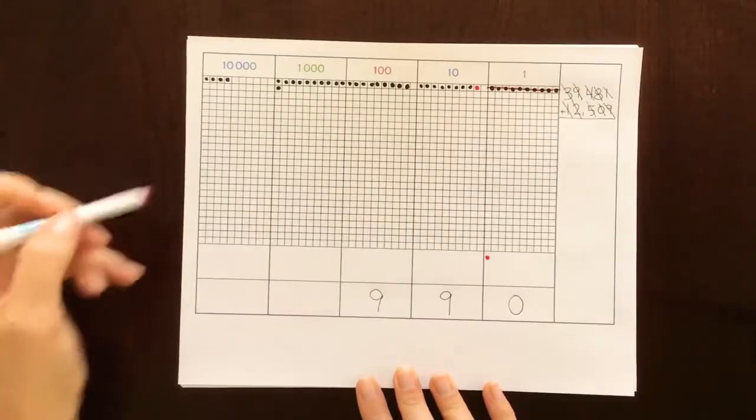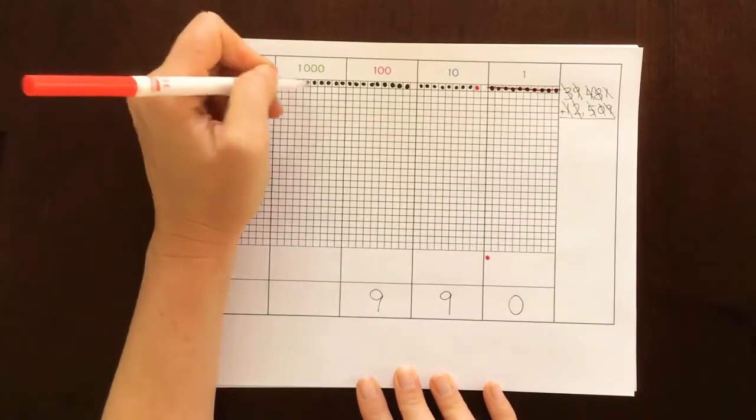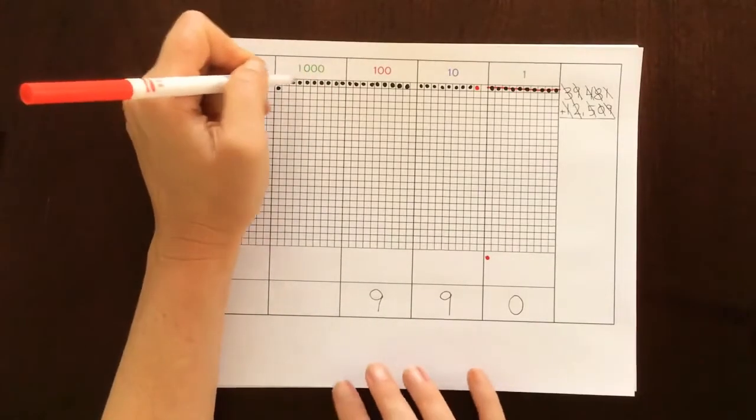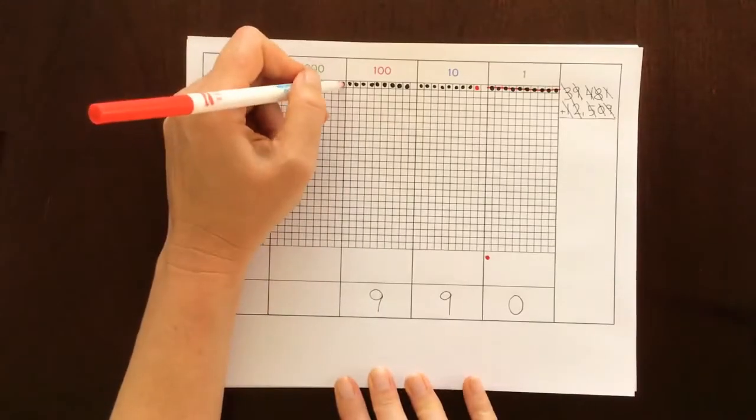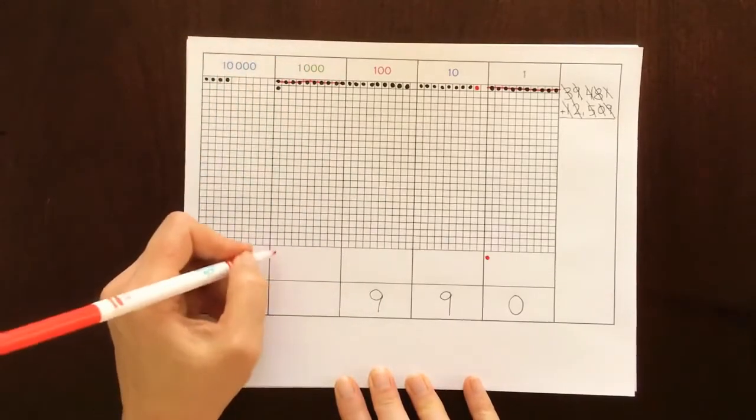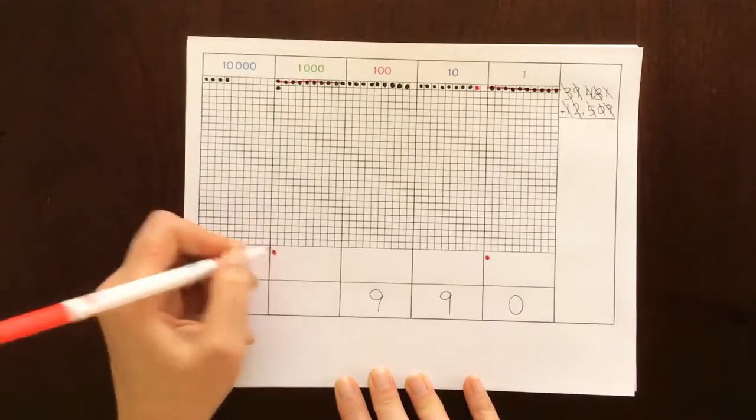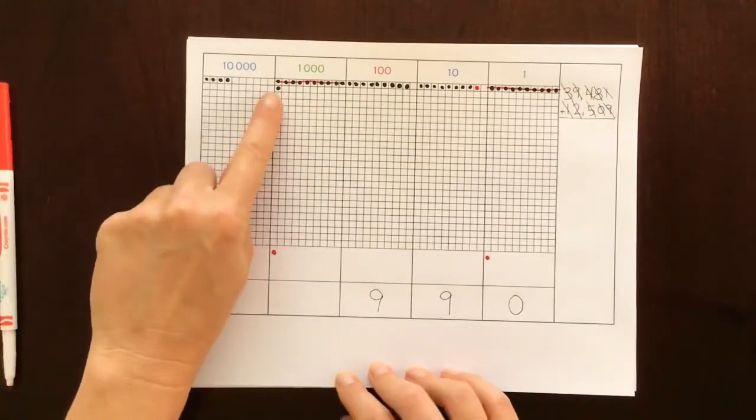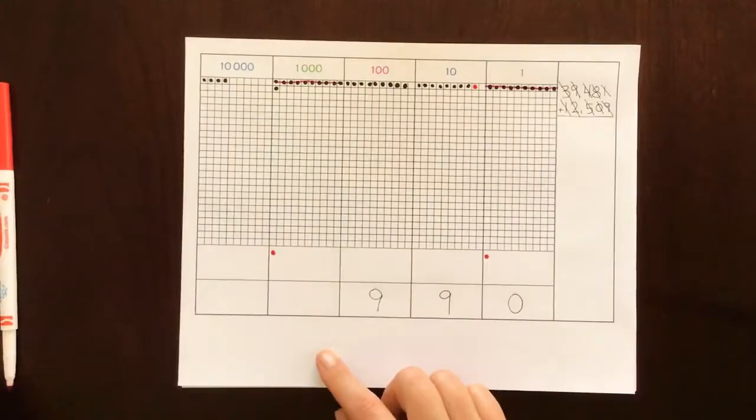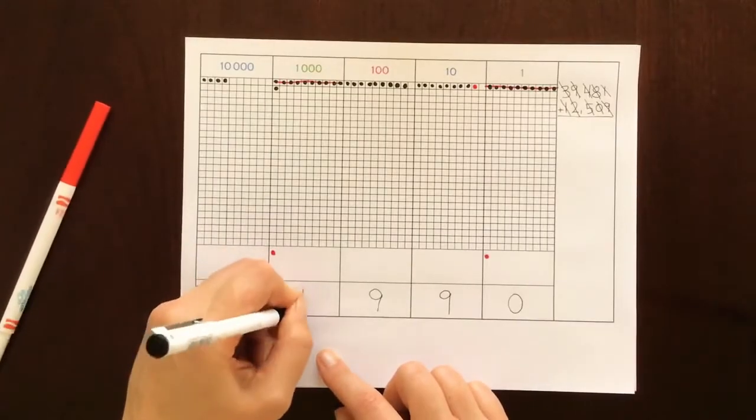Back to the thousands place. I can already see I have 10. I need to make an exchange. So let's cross that out and we'll put a little dot here to remind us we made that exchange. And I only have 1 left in the thousands place, so let's put our 1 here.